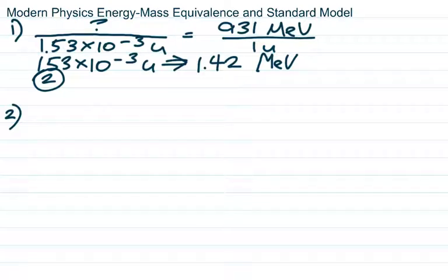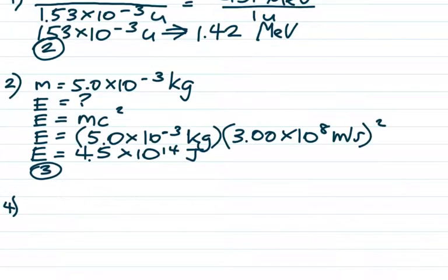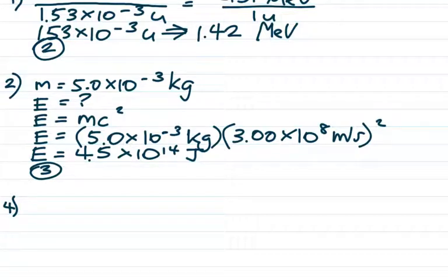Number 2 is another mass-energy equivalence question, but this one goes from kilograms to joules. That's E equals mc squared. Don't forget that C is the speed of light in the vacuum — that's on the front page of the reference table if you forget that number. And don't forget to square it. You get 4.5 times 10 to the 14 joules. That's choice 3.